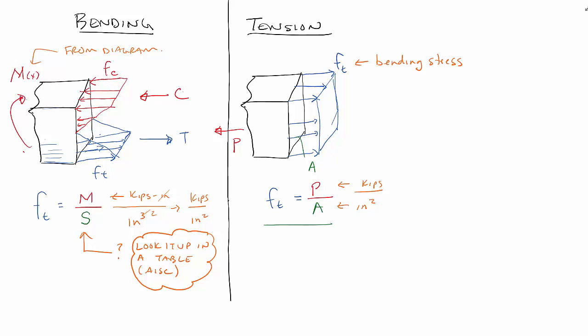What we're going to do with design is use this S, or another number we're going to call Z for the plastic section. Another interesting thing we can do is say, if we want to know the capacity of something, the moment M capacity equals — if I solve for M — that's Ft times S. And if I want to take it to the point of yield, the moment at yield MY is equal to Fy times S. So this is something we're going to start working with here.